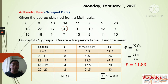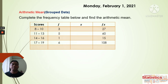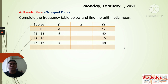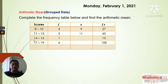Now we go to the next example: complete the frequency table and find the arithmetic mean. We already have a table and just need to fill in the missing midpoint values. The midpoint for 8 to 11 is 9; for 11 to 13 is 12; for 14 to 16 is 15; and for 17 to 19 is 18.